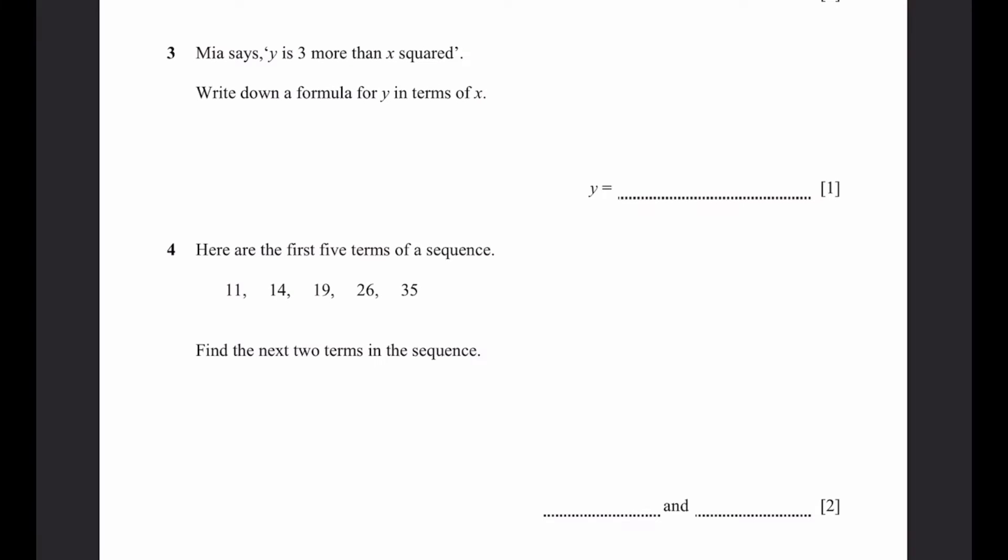Question 3. Mia says y is 3 more than x squared. Write down a formula for y in terms of x. So y is 3 more, or 3 plus, x squared. It's as simple as that. That's the answer.